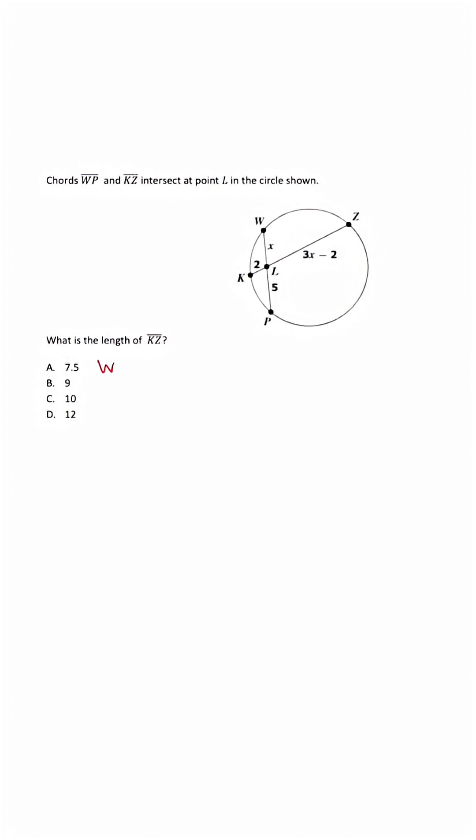So we're basically doing W times L times P is going to be equal to K times L times Z. So when we set this actual problem up, what we're saying is 2 times 3x minus 2 is going to be equal to 5 times x.